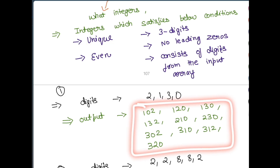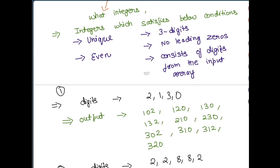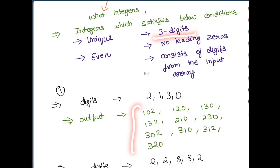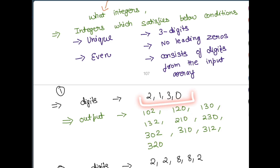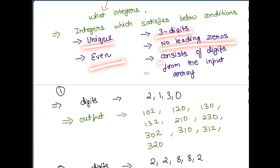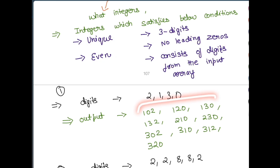All the numbers are even, all are three digits without any leading zeros — none of the numbers have a first digit of zero, they all start from 1, 2, or 3. The main condition is also satisfied: every number in the output consists of digits from the input array [0, 1, 2, 3]. You need to find all such three-digit numbers that are unique, even, without leading zeros, and use digits from the input array.